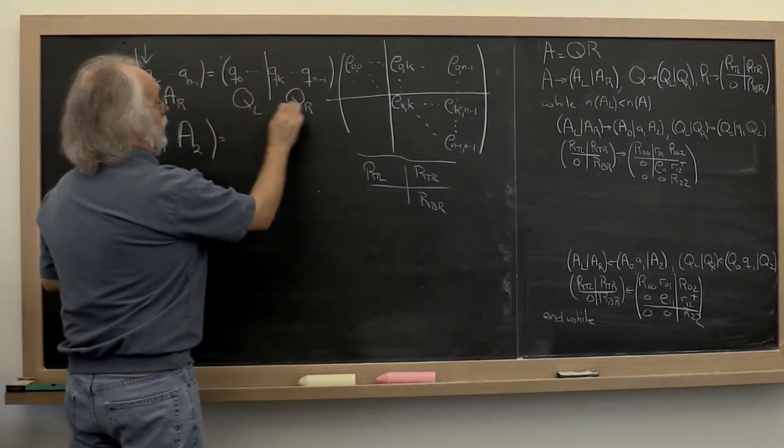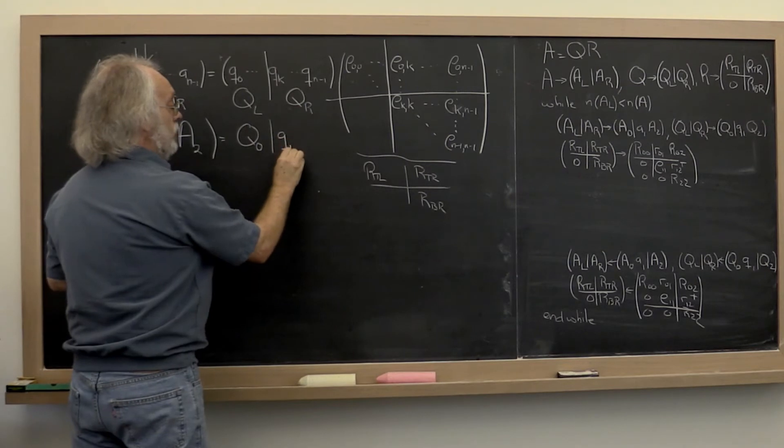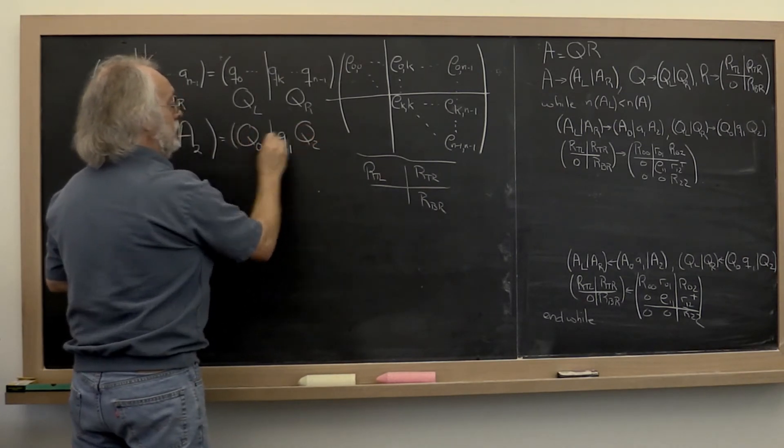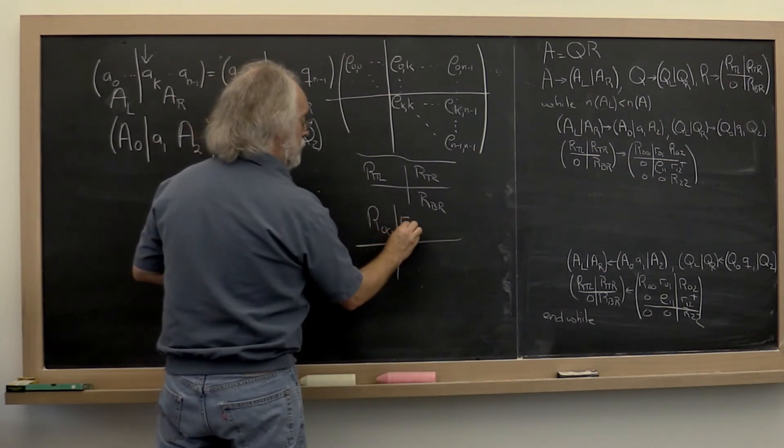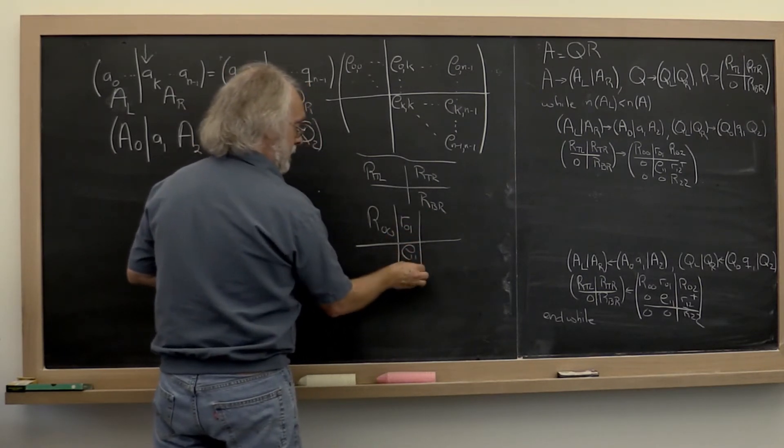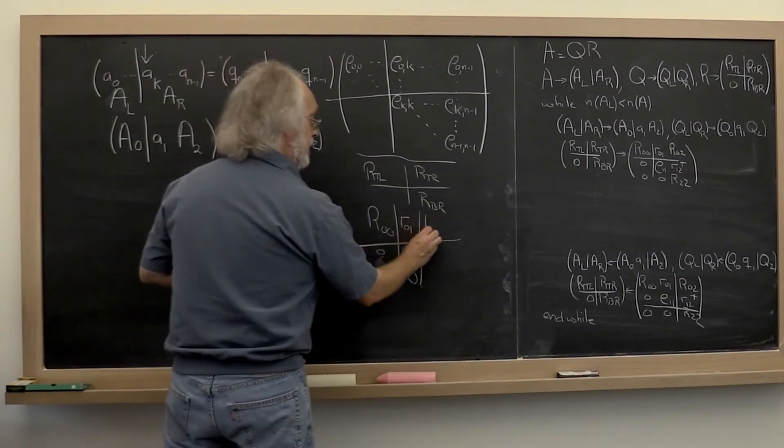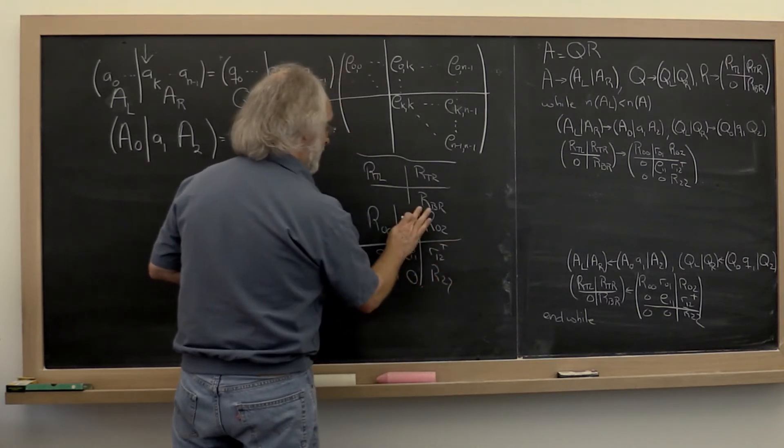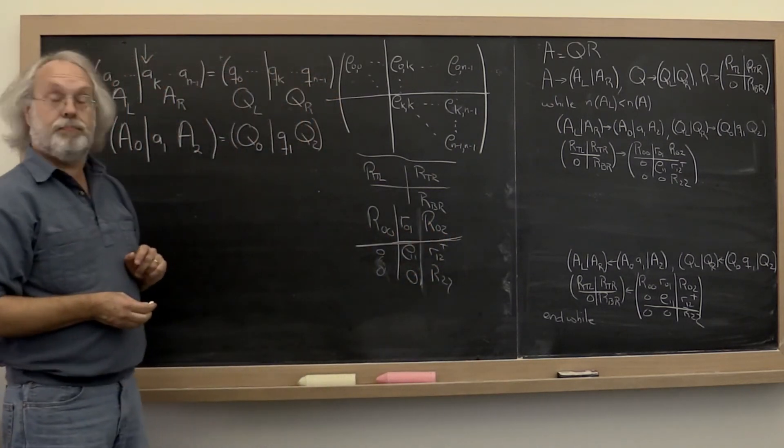Similarly, we can say Q_L we're going to relabel as Q_0 and then Q_R we're going to expose the current column of Q, the one indexed by k up here, and then Q_2. And then this here we're going to relabel as R_{0,0}. And now we're going to expose the next column of R. But that gets partitioned into this and that with zeros below here. And then this gets relabeled R_{0,2}, R_{1,2}, transpose R_{2,2}. And we actually should take this away.